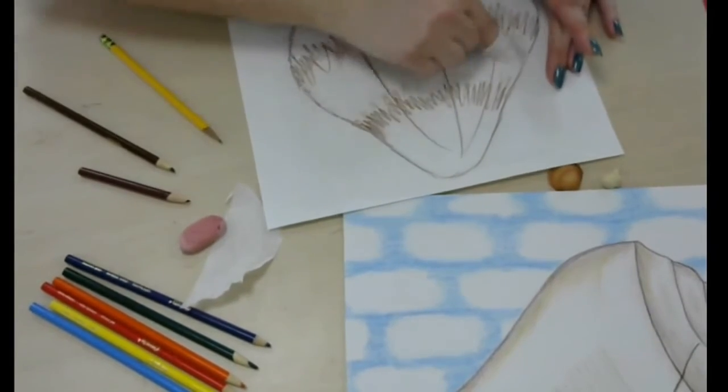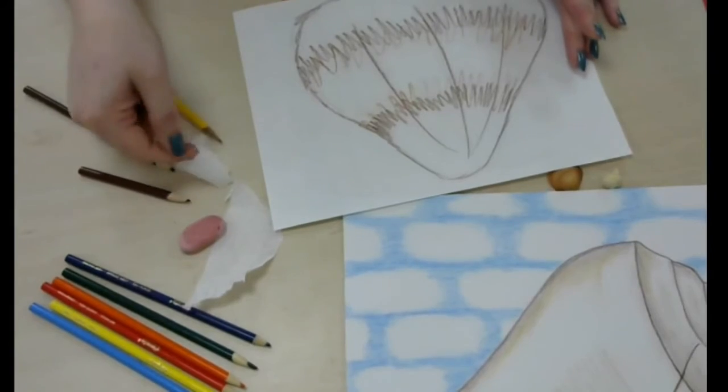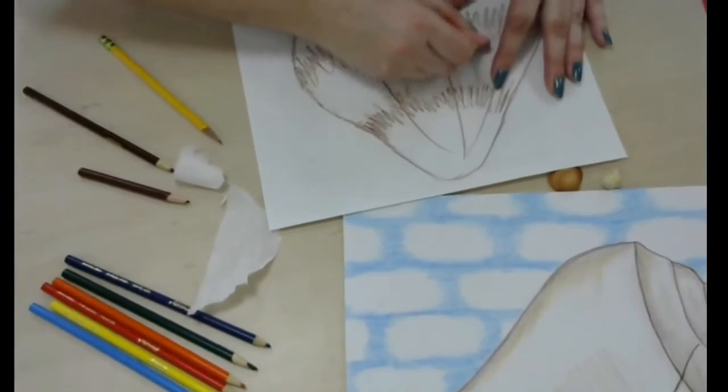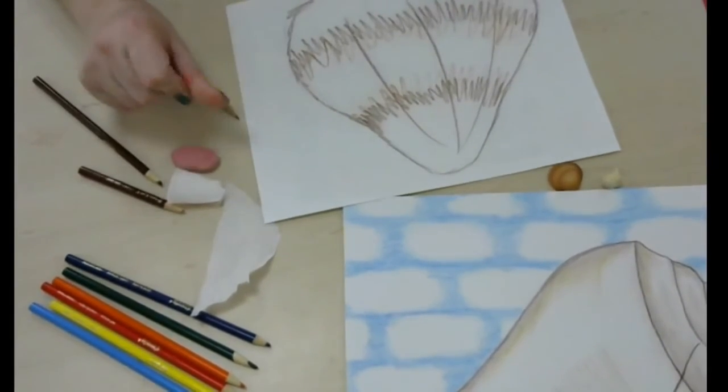No matter how hard you try, at some point, you're going to rub into a part that you didn't quite want that much color. And sometimes this eraser can help. It can get that white spot back a little bit with erasing.